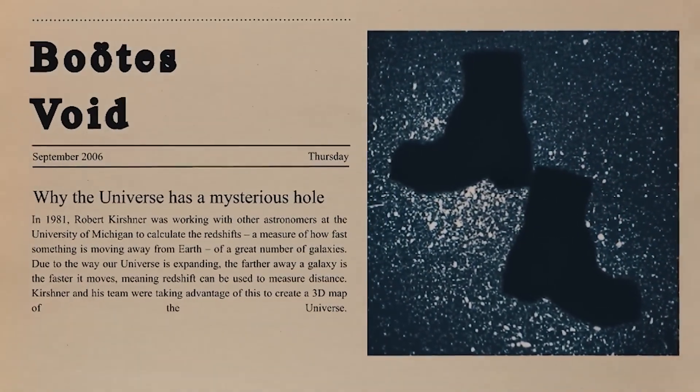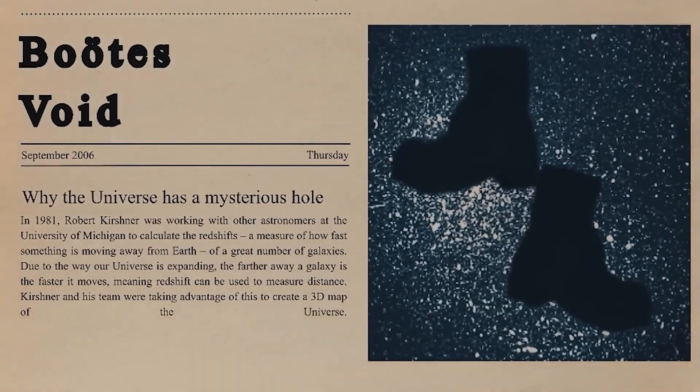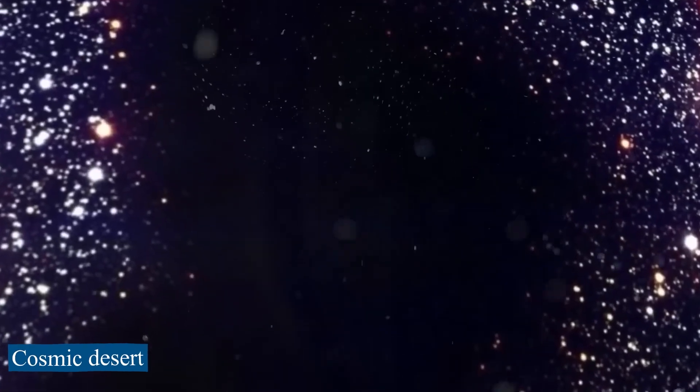Another interesting aspect of the Boötes Void is that it appears to be relatively isolated from the rest of the universe. This means that it has not been significantly affected by the gravitational pull of neighboring structures and may represent a kind of cosmic desert that has been left behind by the evolution of the universe.